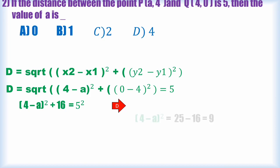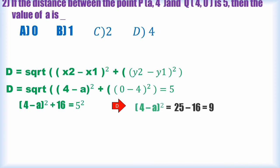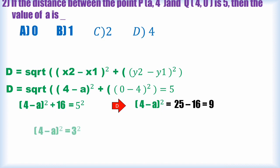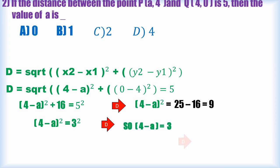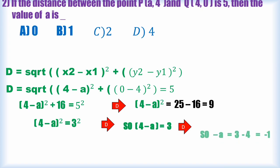Squaring both sides: (4 - a)² + 16 = 25. This gives (4 - a)² = 25 - 16 = 9 = 3². Taking square root on both sides: 4 - a = 3, which implies -a = 3 - 4.